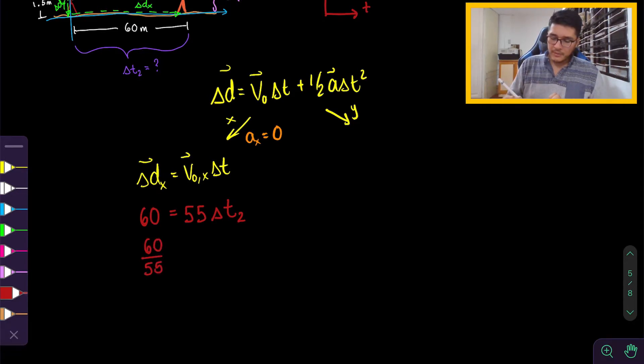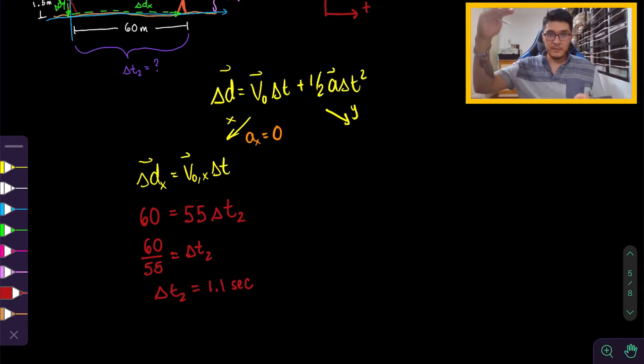So that's what we're trying to find. So divide both sides by 55. So let's put this into our calculator. You get about 1.1 seconds. So it takes about 1.1 seconds for it to travel 60 meters.